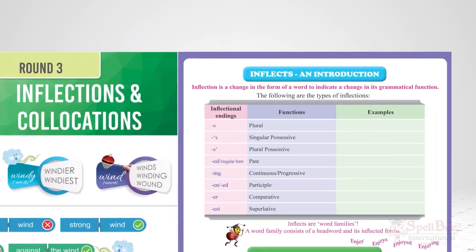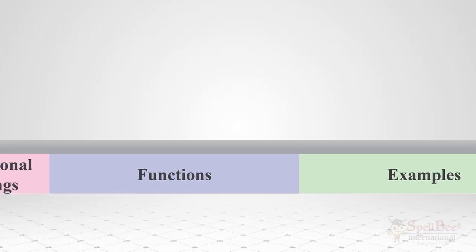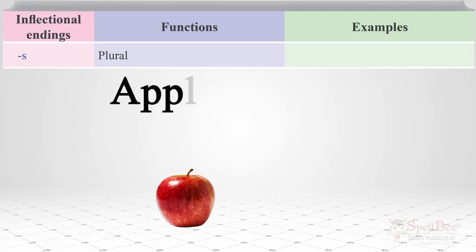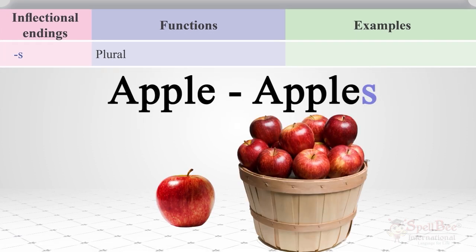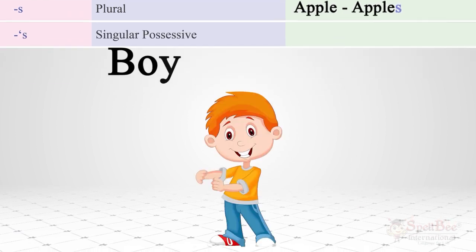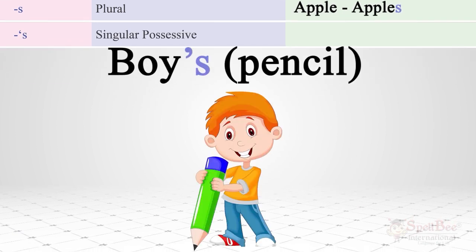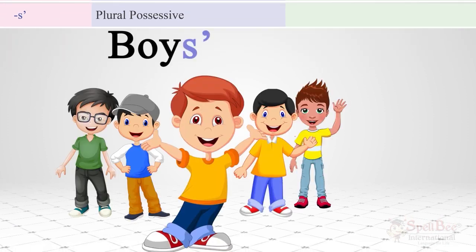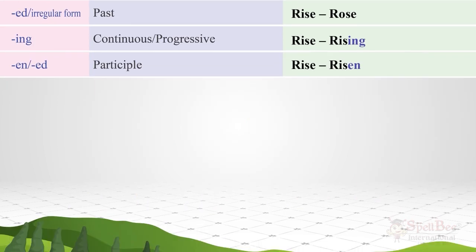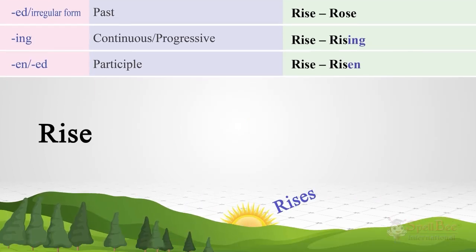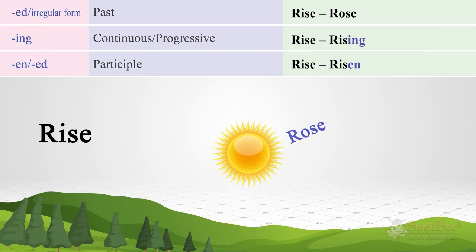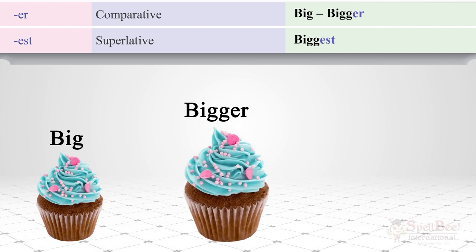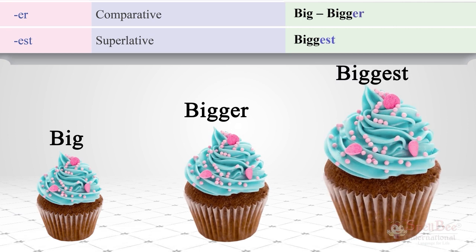So what are inflections? A word can get inflected in the following ways. First, you can add an 's' to make it a plural word, or add an apostrophe-s to make it a singular possessive, or add s-apostrophe, for example, 'boys.' A verb can also get inflected: rise, rises, rising, rose, and risen. Words can also become adjectival inflections, like 'bigger' and 'biggest.'